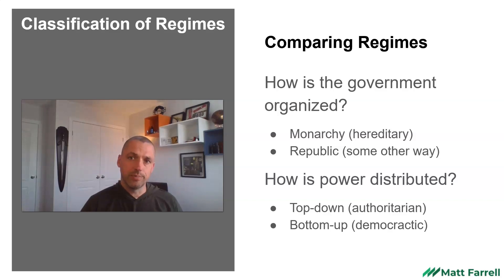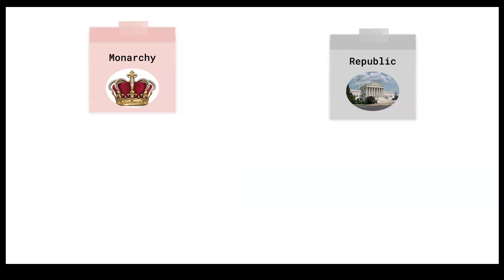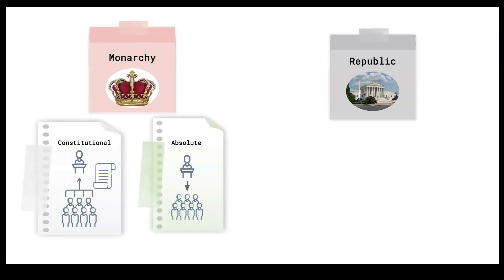We can start by describing regimes as belonging to two general categories: a monarchy or a republic. In a monarchy the head of state would be somebody hereditary like a king or queen, and in a republic the head of state could be somebody like a president. Within a monarchy you could have a democratic one — a constitutional monarchy, where the monarch gives power to the people and their roles and responsibilities are dictated by a constitution — or an absolute monarchy, where the monarch exercises absolute power over the people.